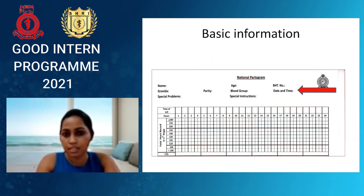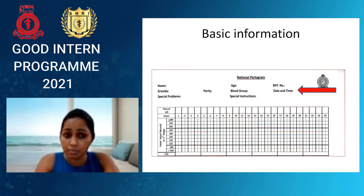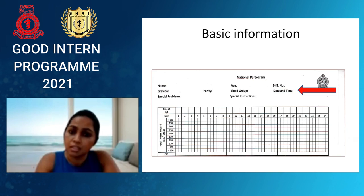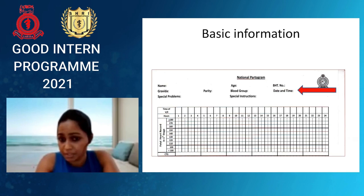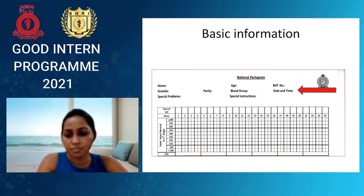The partogram starts with basic information: patient's name, age, ID number, gravida, parity, blood group, date and time — very important — and special problems such as anaemia, cardiac disease, or whether this is a prostaglandin induction. Special instructions are noted here, for example being prepared for postpartum haemorrhage if the patient is anaemic, so prophylactic measures can be taken.